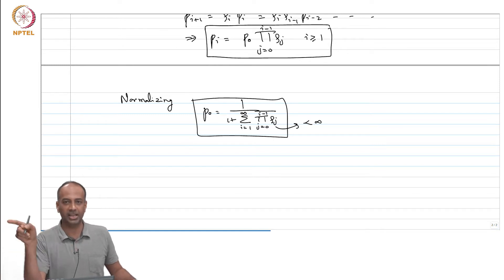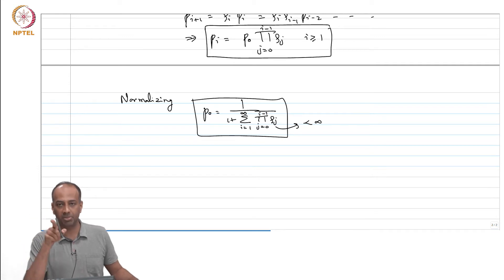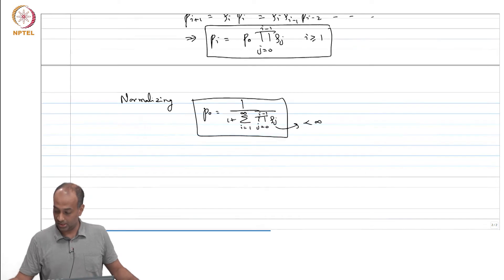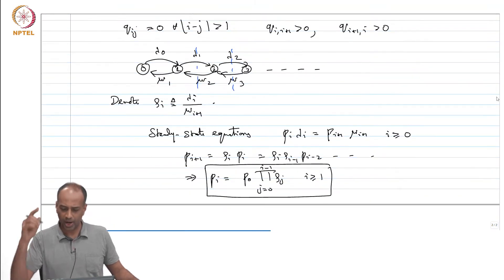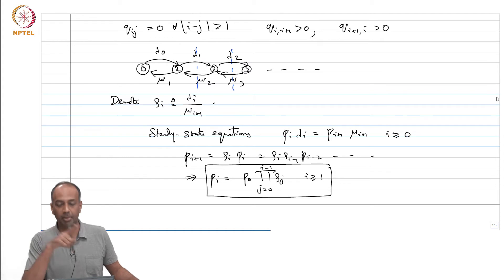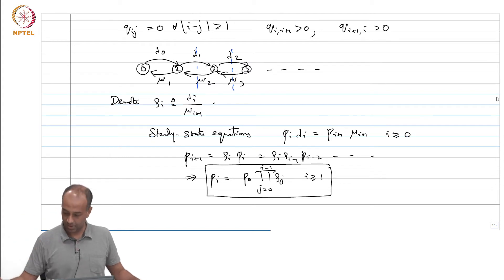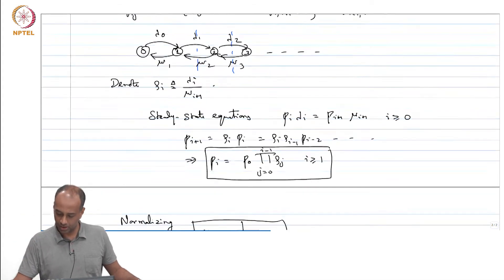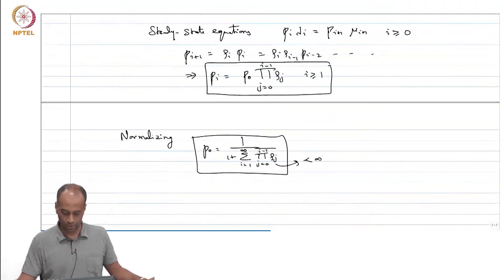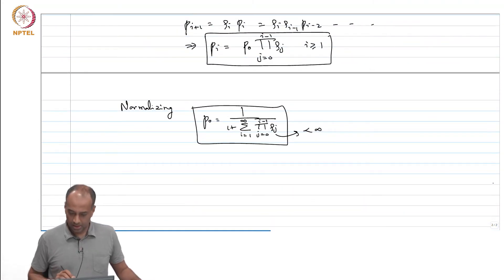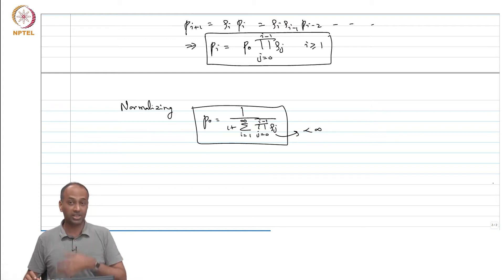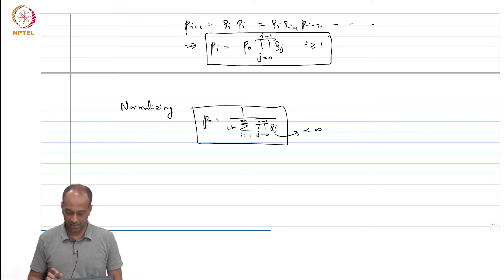The forward lambda_i's are the birth rates at state i, and mu_i is the death rate at state i. You can solve this — it is a very simple CTMC to solve. A lot of very important Markovian queuing systems fall under this birth-death category.